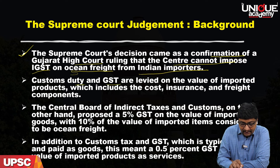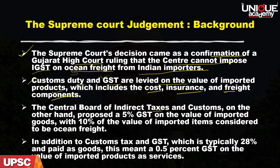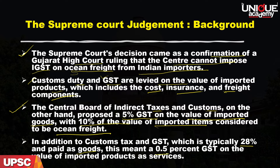Customs duty and GST are levied on the value of imported products, which includes the cost, insurance, and freight components. The Central Board of Indirect Taxes and Customs proposed an additional 5% GST on the value of imported goods, with 10% of the value of imported items considered to be the ocean freight. In addition to custom tax and GST — typically 28% — this meant a further 0.5% GST on the value of imported products.